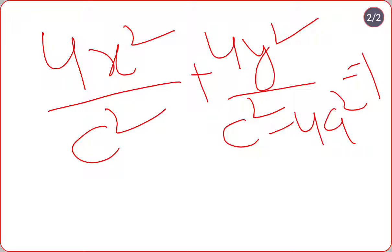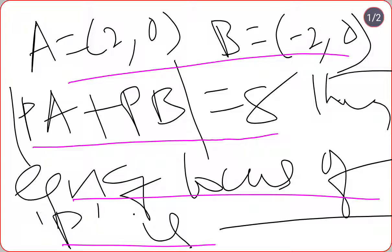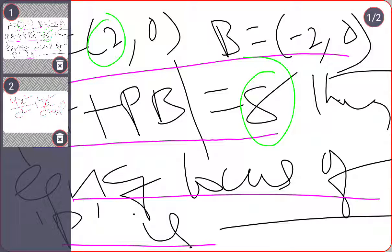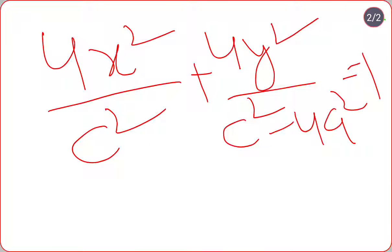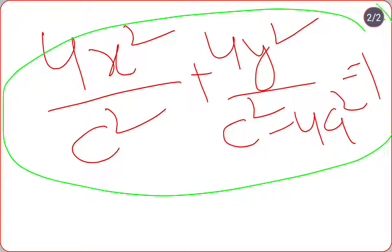What I will have to do is take a value as 2 and c value as 8. This a and c value I will have to substitute into the shortcut formula, and I will be getting my required answer.